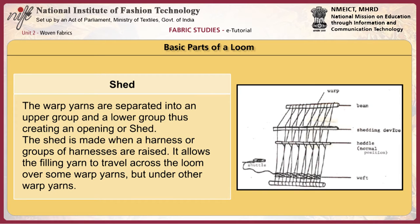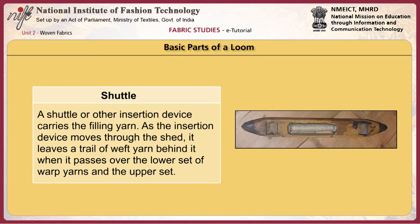The warp yarns are separated into an upper group and a lower group, thus creating an opening or shed. The shed is made when a harness or groups of harnesses are raised. It allows the filling yarn to travel across the loom over some warp yarns but under others. A shuttle or other insertion device carries the filling yarn. As the insertion device moves through the shed, it leaves a trail of weft yarn behind it.